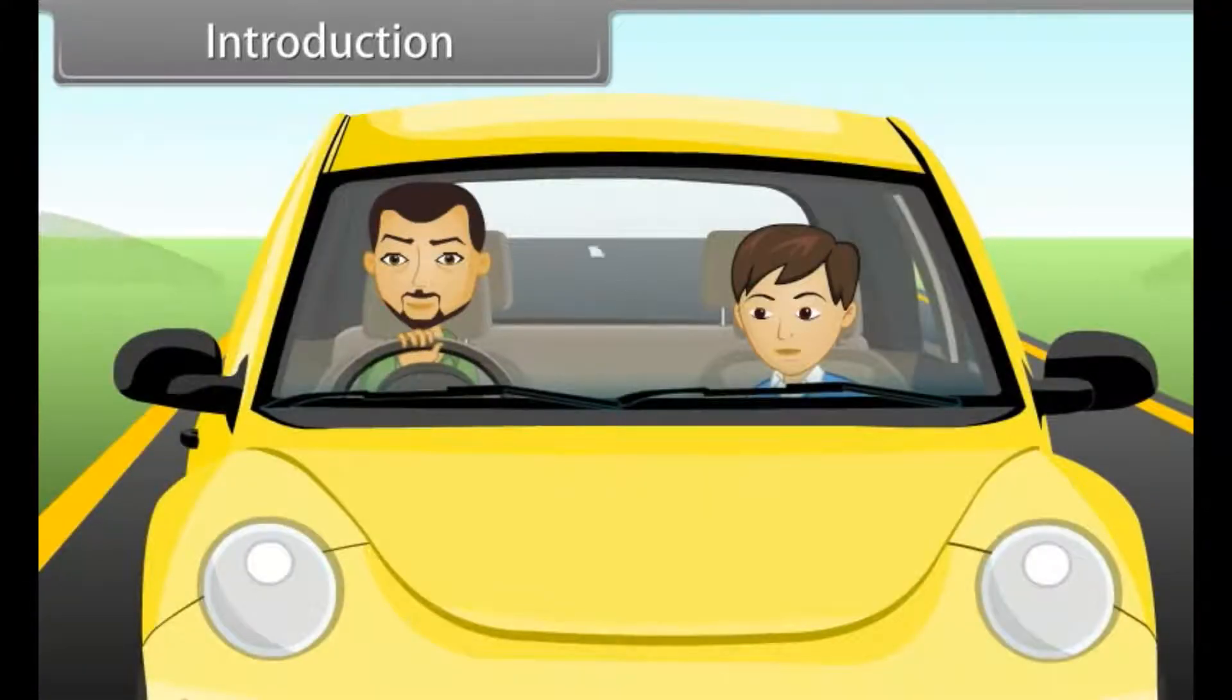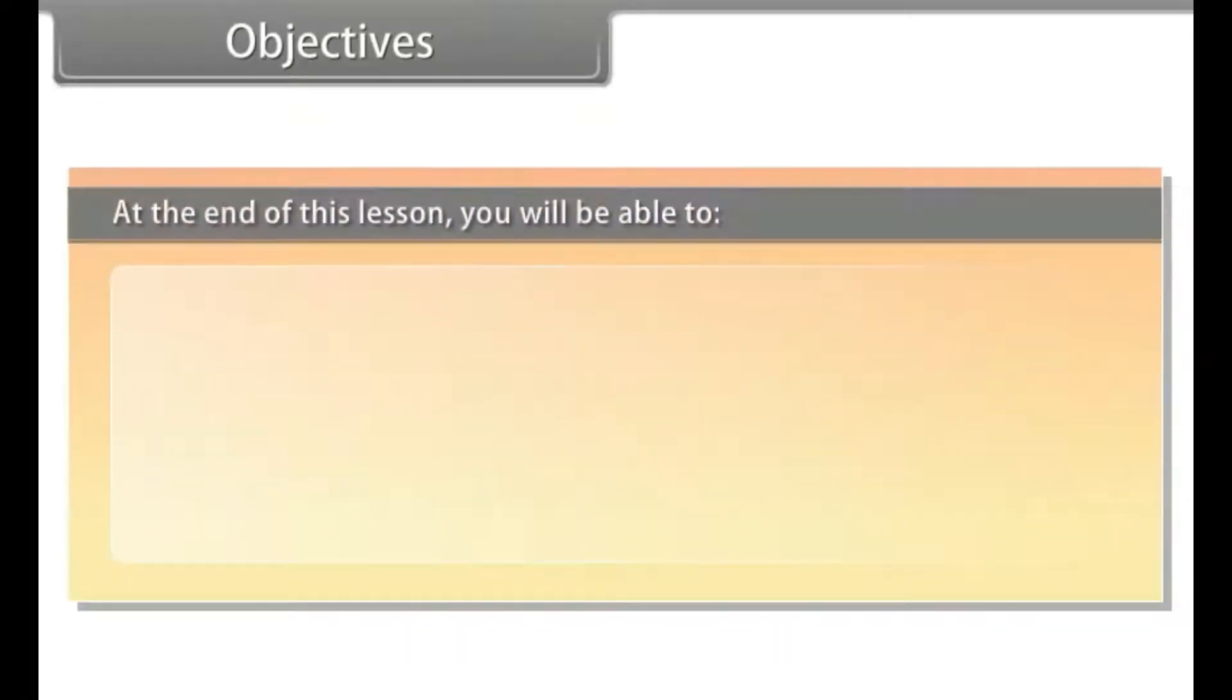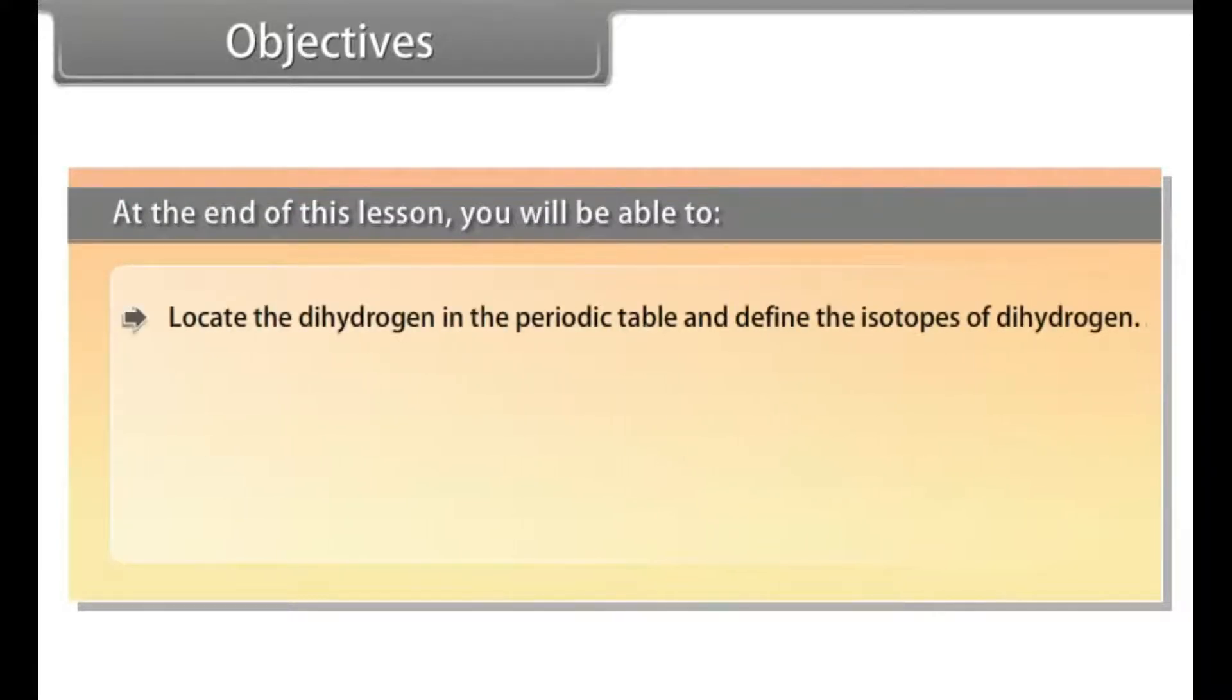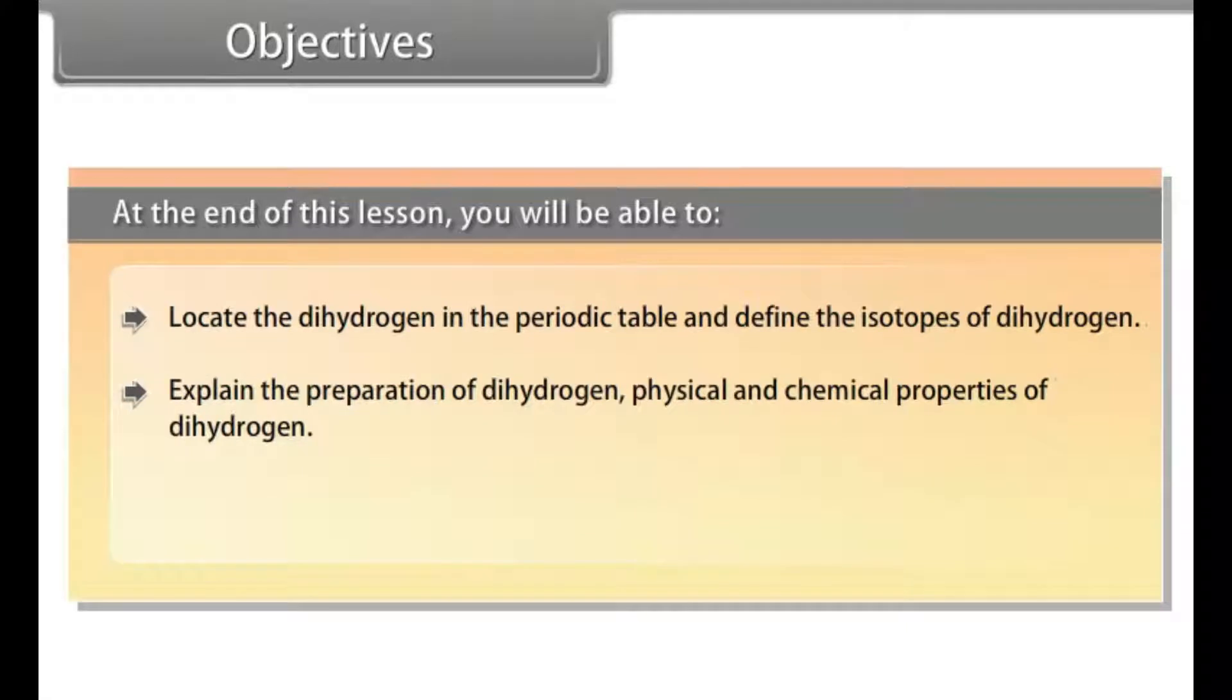In this lesson, you will learn hydrogen and its compounds. Objectives: At the end of this lesson, you will be able to locate the hydrogen in the periodic table and define the isotopes of hydrogen. Explain the preparation of dihydrogen, physical and chemical properties of dihydrogen. Explain hydrides.